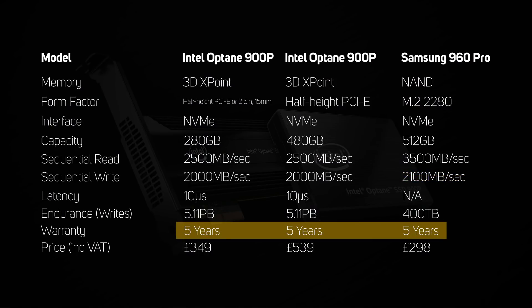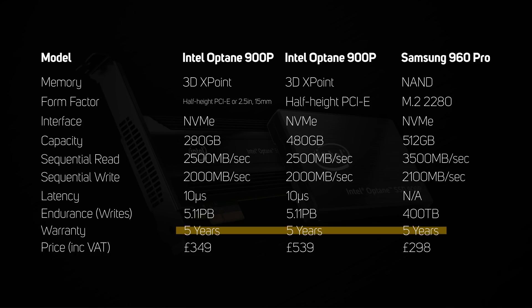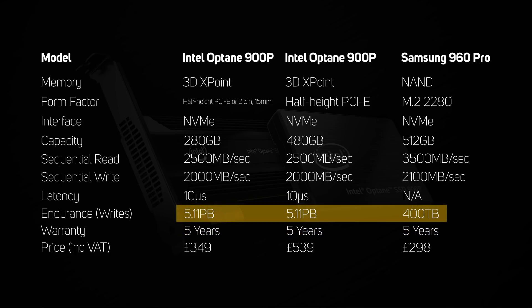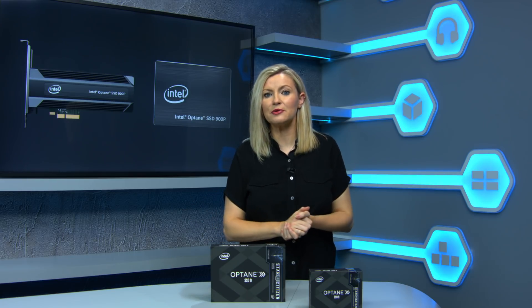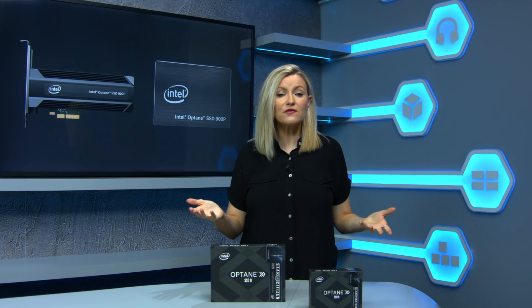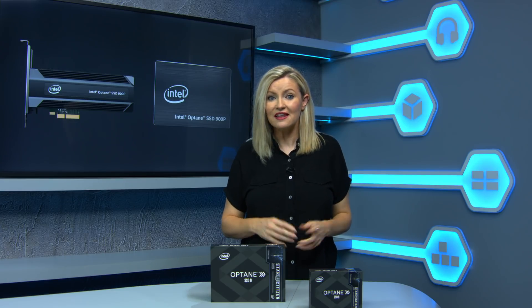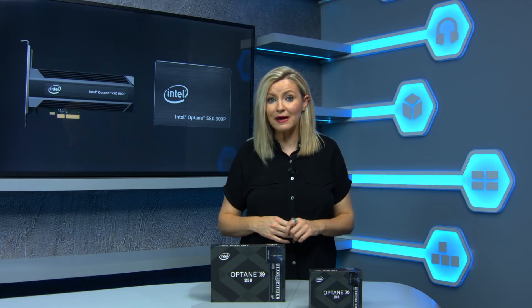The specs also show that whilst both drives have a 5-year warranty, there's an enormous difference in the endurance rating. This number is the total amount of data that can be written to a drive before the cells wear out, and in this instance shows one of the key benefits of 3D Crosspoint over NAND, with the Optane 900p having over a thousand percent more endurance than the 960 Pro. Whilst this amount of endurance is arguably overkill for a typical gaming PC, if you're doing content creation work such as editing videos and graphics, then a high endurance drive will be of benefit.